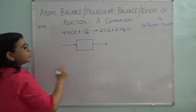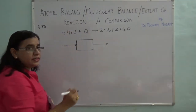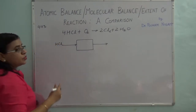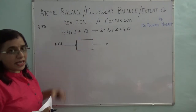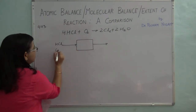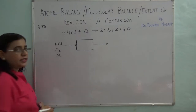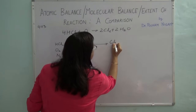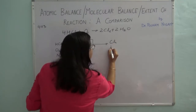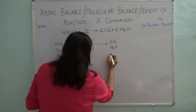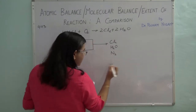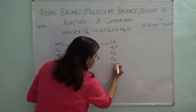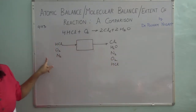Nothing has been said about the flow rates, so I will start writing one by one. I have hydrogen chloride going in. Oxygen is supplied as air, so oxygen and nitrogen both are going in. In the exit stream I will have products: chlorine, then water, then nitrogen which is not reacting. Of course some unreacted components will also come out.